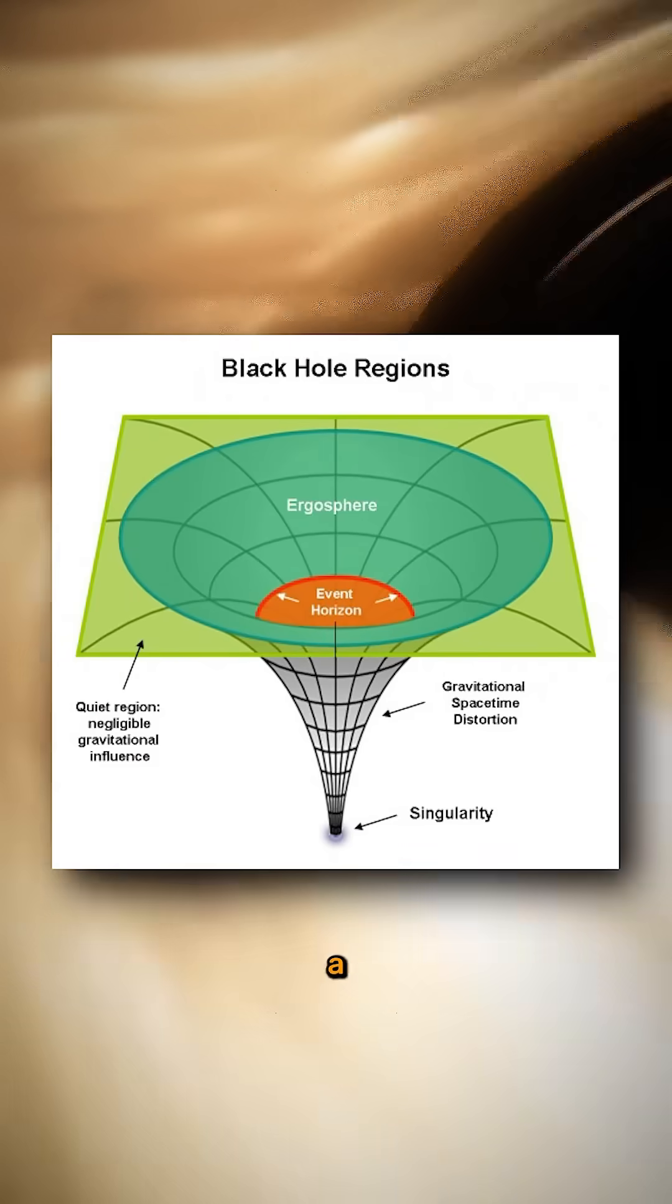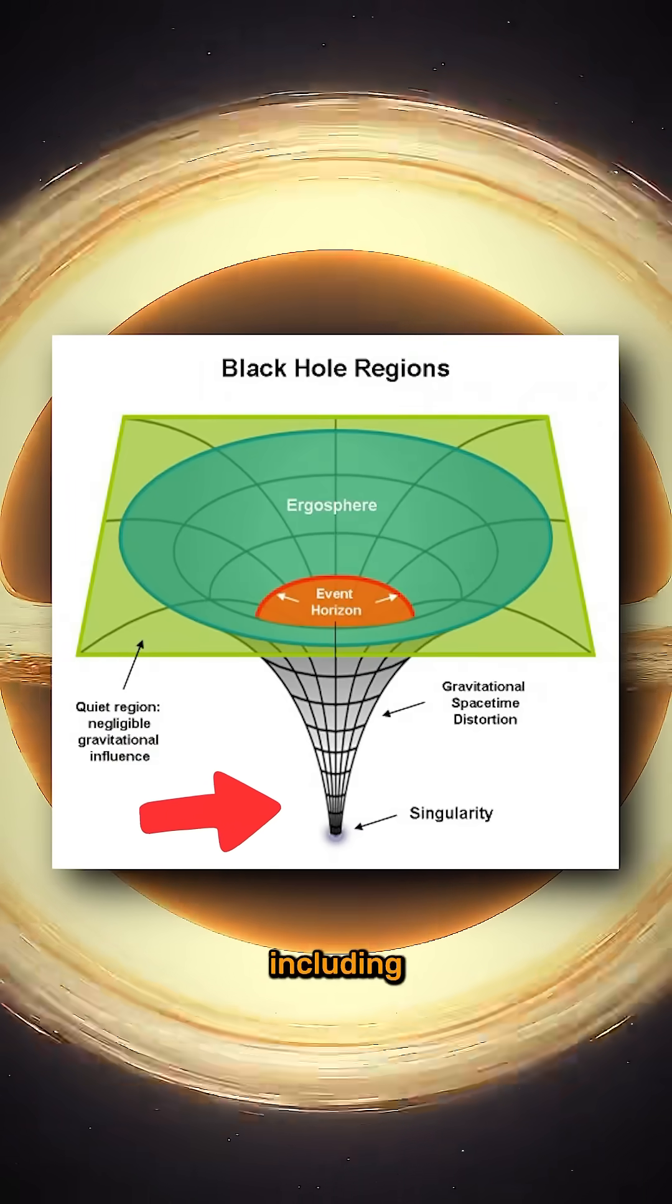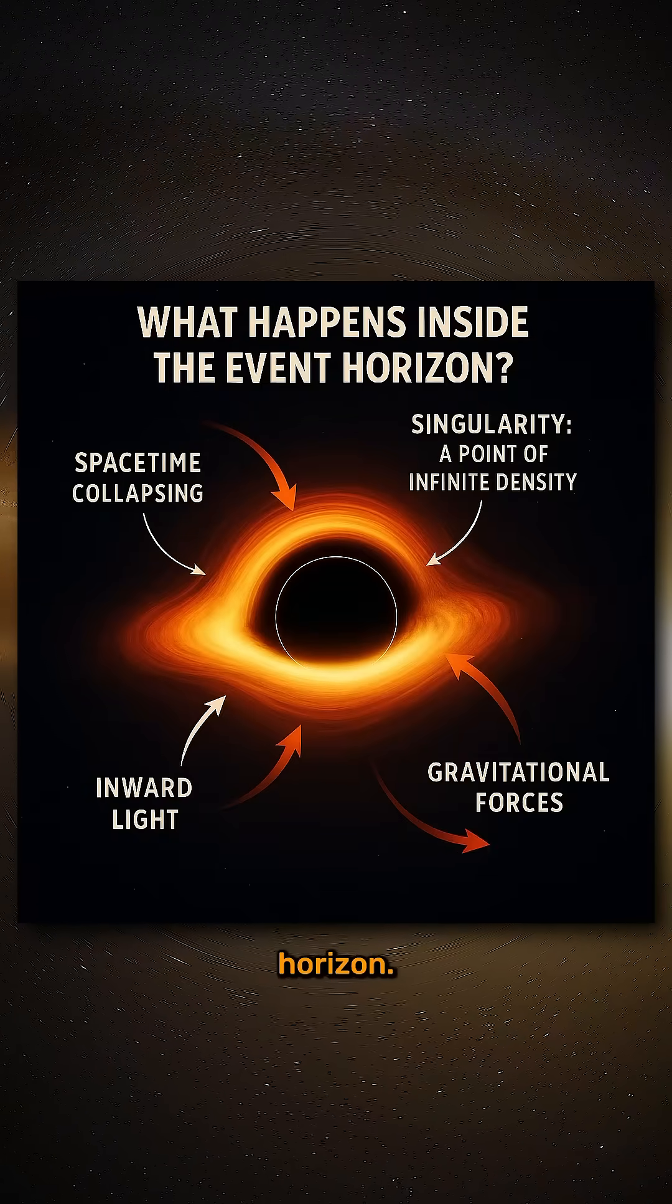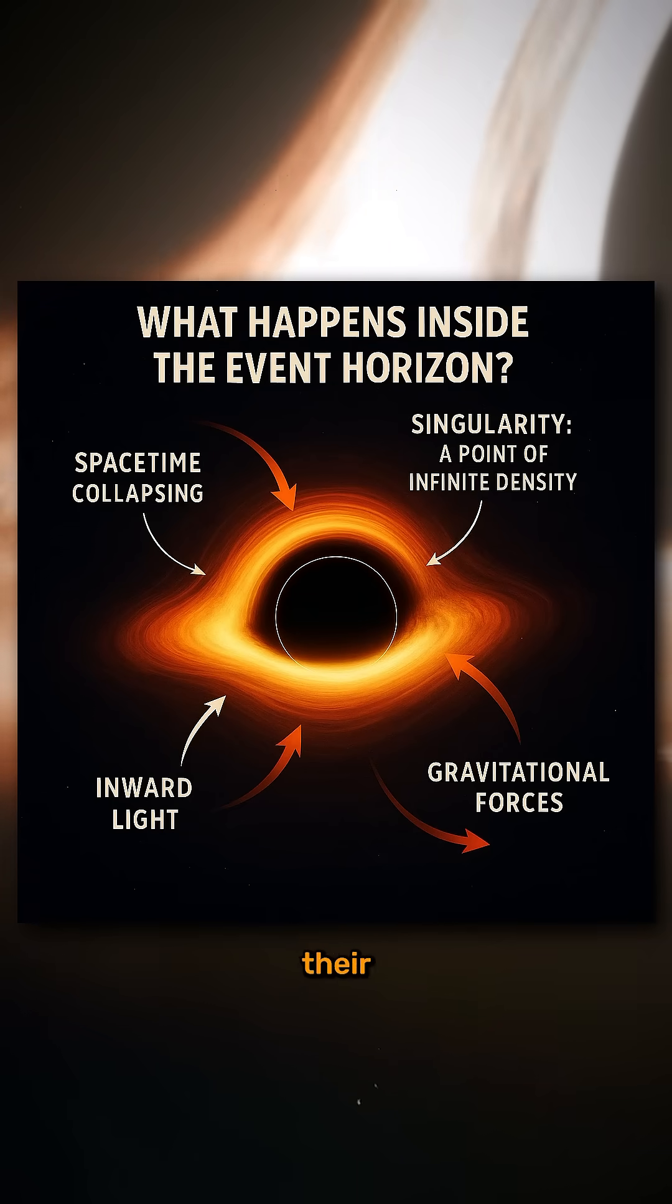According to general relativity, a black hole bends spacetime to such an extent that all possible paths, including those of light, are bent inward. Inside the event horizon, all paths point to the singularity. Black holes also affect their surroundings.